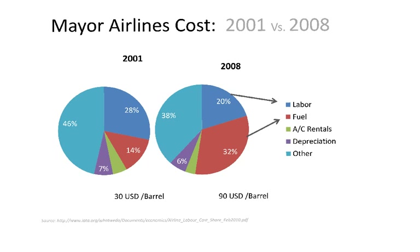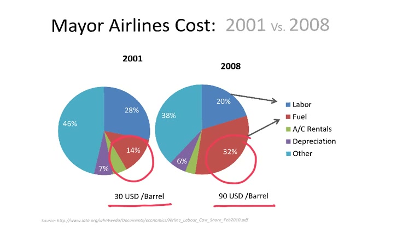So if we make a comparison before and after September 11, what was the total fuel cost percentage for airlines? We see a big difference. In 2001 we had 14% as the percentage of fuel cost, versus 32% in 2008. This big jump in fuel prices has dramatically increased the percentage of fuel cost for airlines. Before September 11 we were talking about $30 per barrel, and in 2008 we were talking about $90 per barrel.